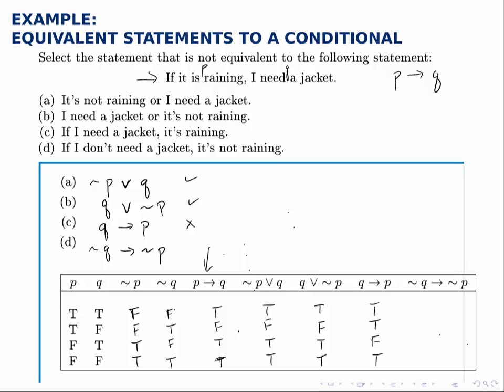So looking through there, the one case where not Q is true and not P is false happens in the second row. So otherwise it's true. We get true, false, true, true. And this too is equivalent to the original conditional statement.